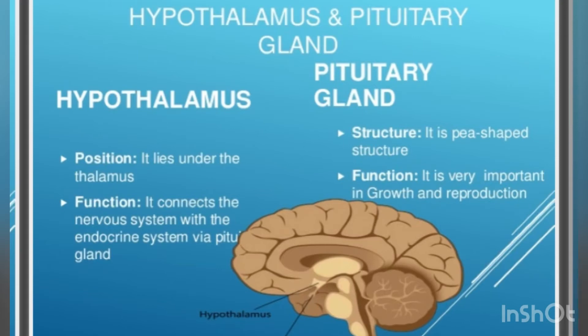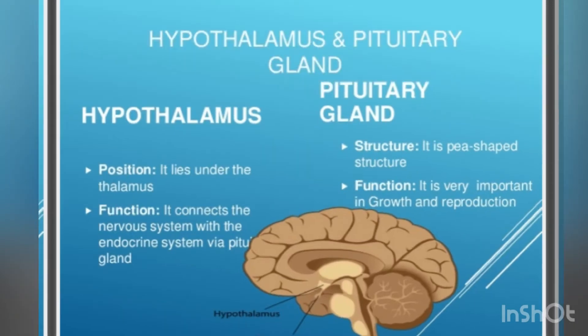Pituitary gland structure: it is a pea-shaped structure. Function: it is very important for growth and reproduction.